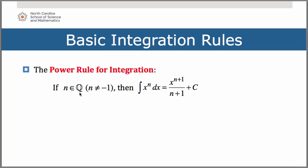The power rule for integration states that if n is an element of the rational numbers — remember Q is the mathematical symbol for the rational numbers, because Q is for quotient, and a rational number is a number that can be expressed as a fraction — and n cannot equal negative 1, then the anti-derivative of x to the n dx is equal to x raised to the n plus 1 power divided by n plus 1 plus c. So you're adding 1 onto the exponent and then dividing by that new exponent.